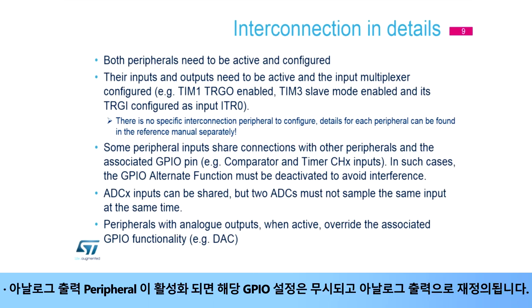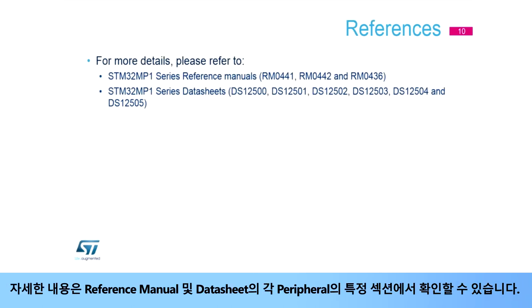Peripherals with active analog outputs override the associated GPIO functionality. Specific details can be found in the specific sections for each peripheral in the reference manual, as well as in the data sheet.